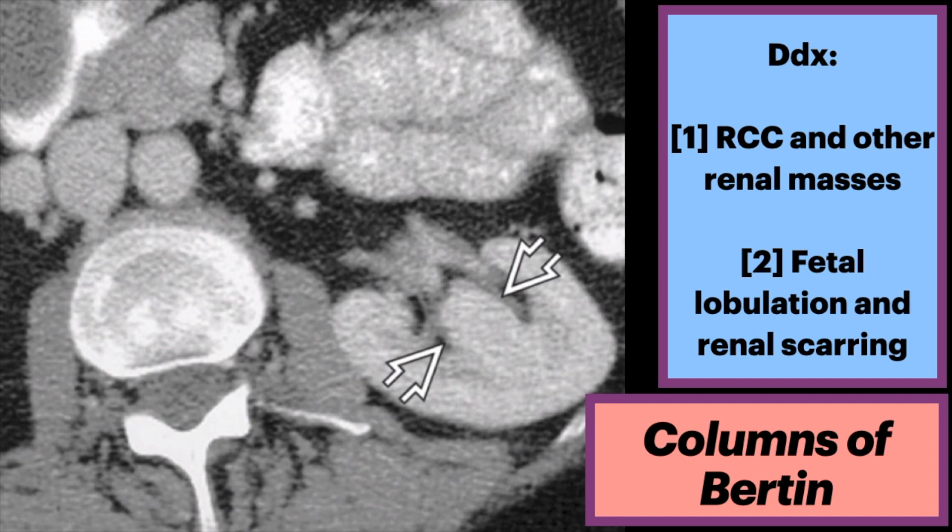Another differential consideration is fetal lobulation and renal scarring, but that has abnormal renal contour.